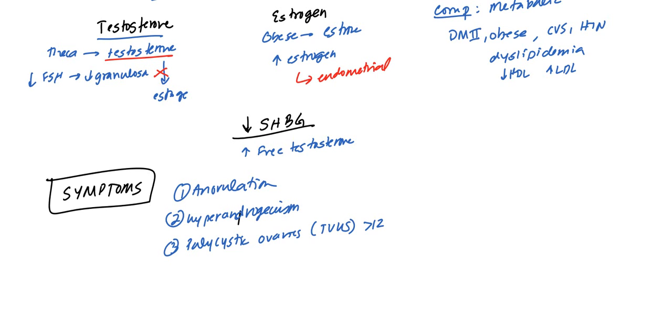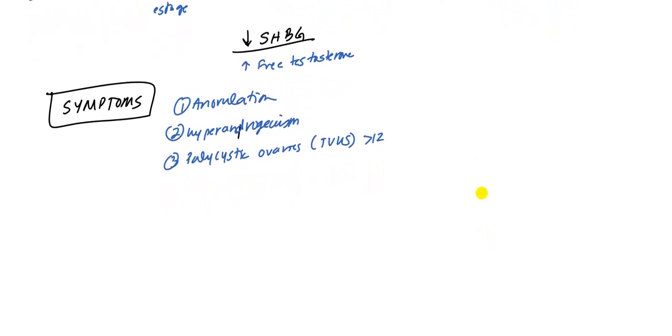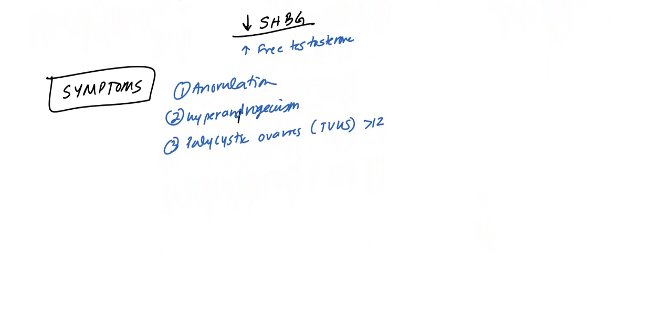Besides these three main symptoms there are other problems as well. Primarily we have irregular menses. They have high estrogen, and there is no progesterone because in order for there to be progesterone you have to have development of the follicle, ovulation, progesterone develops, and then progesterone withdrawal to lead to normal menses.